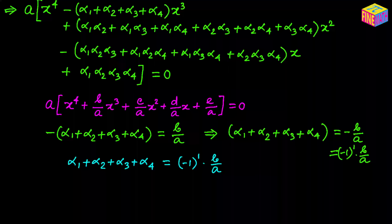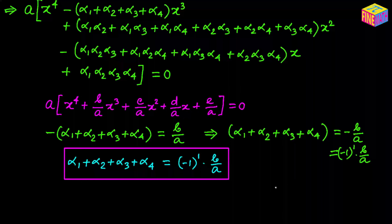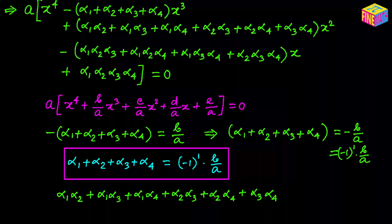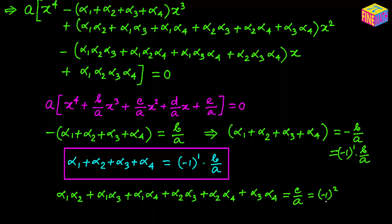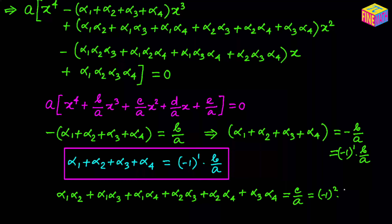Here b is the coefficient of the x cubed term and a is the leading coefficient. Now let's compare the coefficients of the x squared terms. In the expanded form the coefficient of the x squared term equals c over a from the original form, and we intentionally write that as negative 1 squared times c over a to establish the pattern. So we get another important relationship.